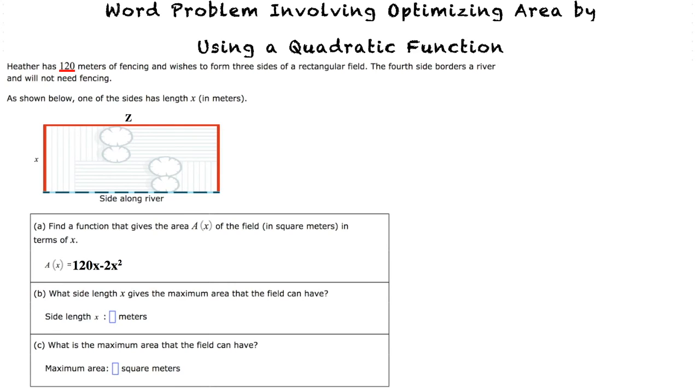The equation for finding a vertex is negative b over 2a. b in this case is the number next to x, 120, and a will be the number next to x squared, which is negative 2, which gives us negative 120 divided by negative 4, which equals 30.